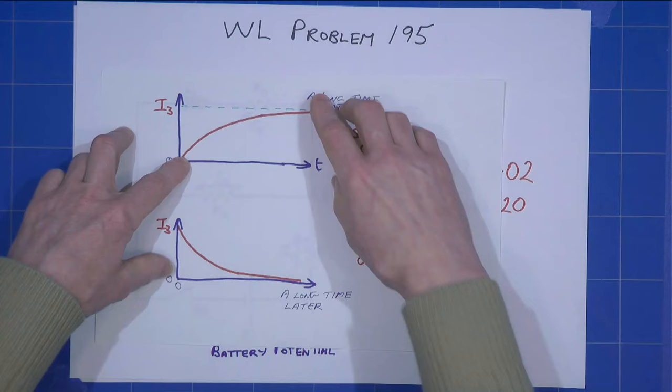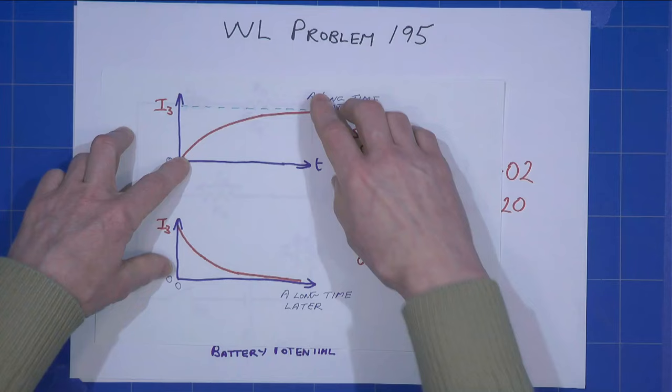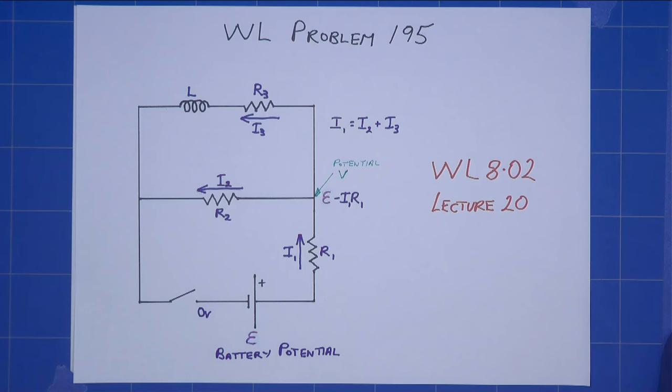And all we're concerned about are the endpoints, if you like, the asymptotes here and the zeros here, here and here.